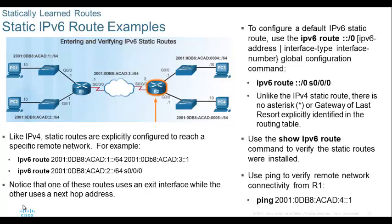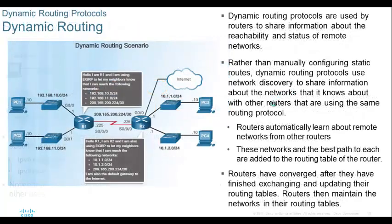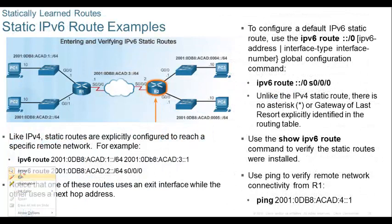Now this is the static route. You know in IPv4 we used '0.0.0.0' — send to itself — that is called a default route. Sorry, IPv6 also has a default route, but it is very simple. Instead of saying '0.0.0.0' in IPv4, we used to write like this. Here in IPv6, just put '::/0'.